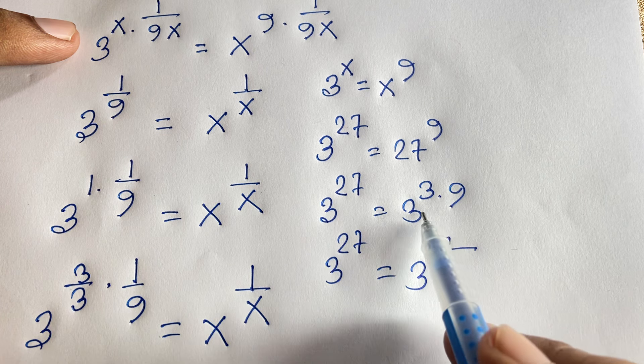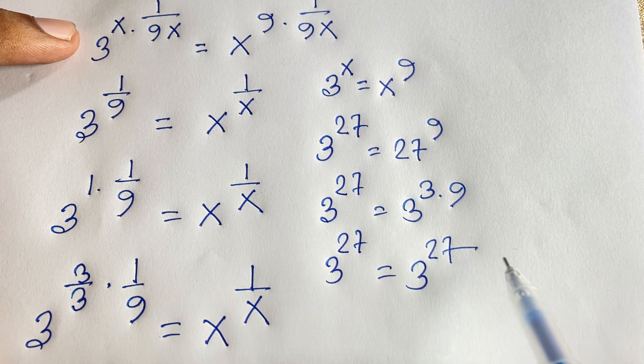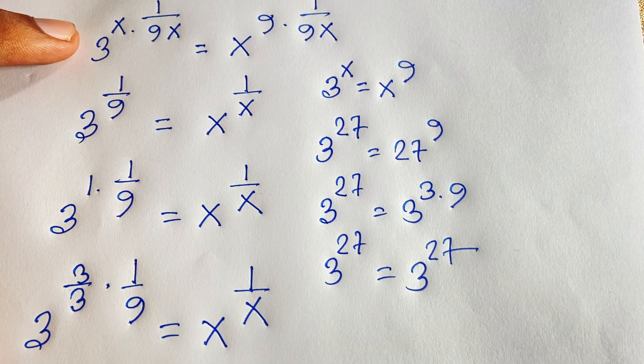Here 3 times 9 equals 27. Thank you all — if you enjoyed this video, please subscribe to my channel for other interesting videos. Goodbye, take care.